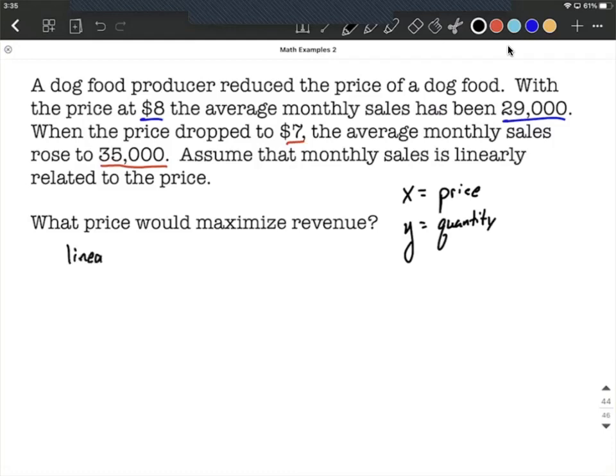We know it's linear, which tells us that our demand function is going to be set up as y equals mx plus b. They gave us two ordered pairs: one ordered pair with an x value of 8 and $29,000 as the quantity, and the other ordered pair, 7 goes along with $35,000.